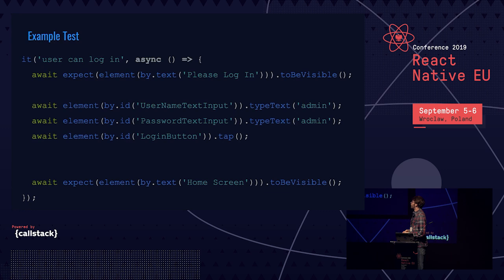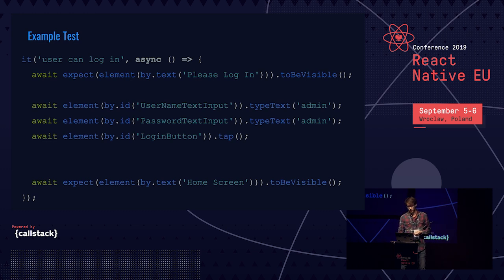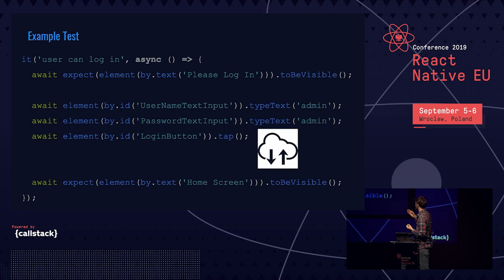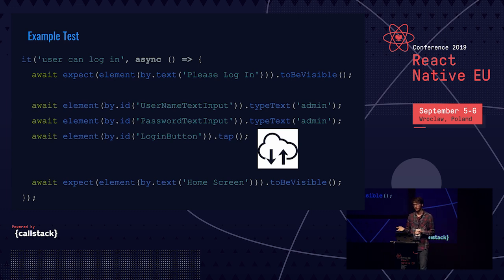Looking at a test, at the top we have the expectation that we're expecting to see the 'please login' label. Then there are three actions: we type admin and admin into the username and password fields, and then we tap the login button. At this point, a network request is fired, which goes to your server and comes back, redirecting the user to a home screen. Detox is clever enough to wait for the network request before running the last expectation, because as a gray box testing tool it injects code into the running app to observe what's going on.